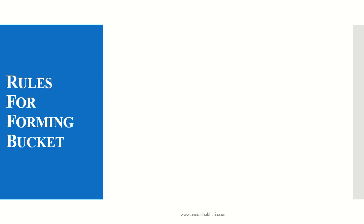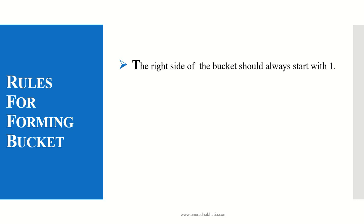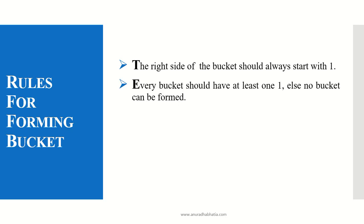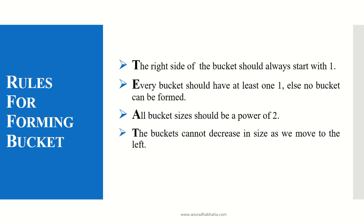There are a few rules that need to be followed when forming buckets. The right side of a bucket should always start with a 1 — if it starts with a 0, we neglect that and start with a 1. Every bucket should have at least one 1 bit, otherwise no bucket is formed. All bucket sizes must be powers of 2. Also, buckets cannot decrease in size as we move to the left — they start at size 1 on the right and increase toward the left.